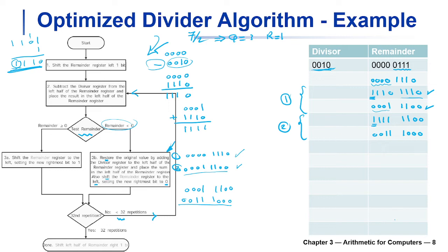Still not four iterations, so we go back and subtract. Adding 0011 and 1110: 1+0=1, 1+1=0 carry 1, 1+1+1=1 carry 1, 0+1+1=0 carry 1 (discarded). The new left half of the remainder register is 0001. We test the remainder — it's positive this time. So we do NOT restore; we keep the remainder value as is, but shift the remainder left setting the rightmost bit to 1. That's iteration three.